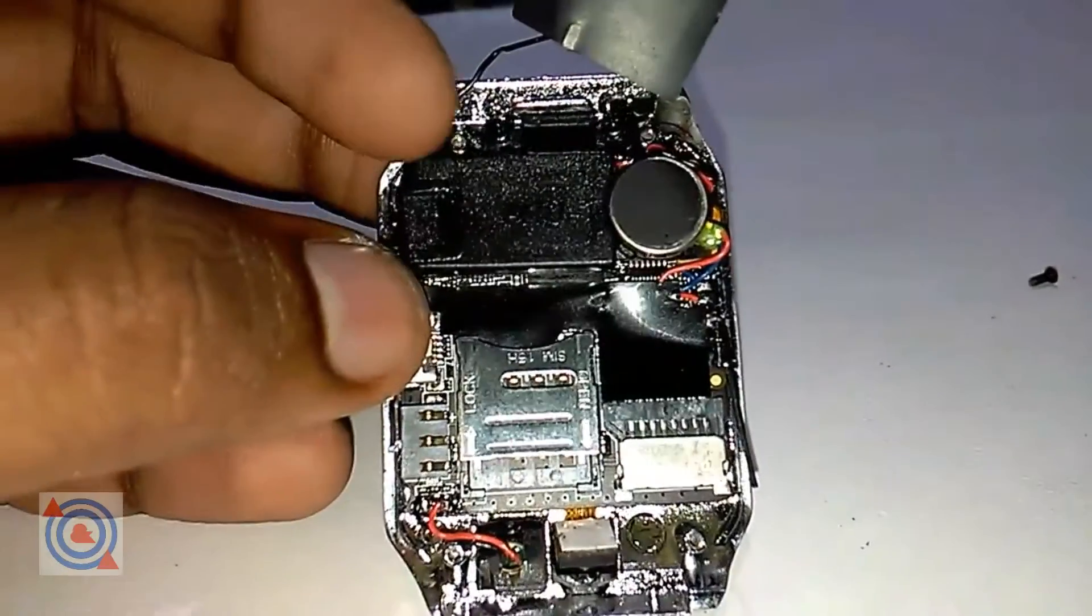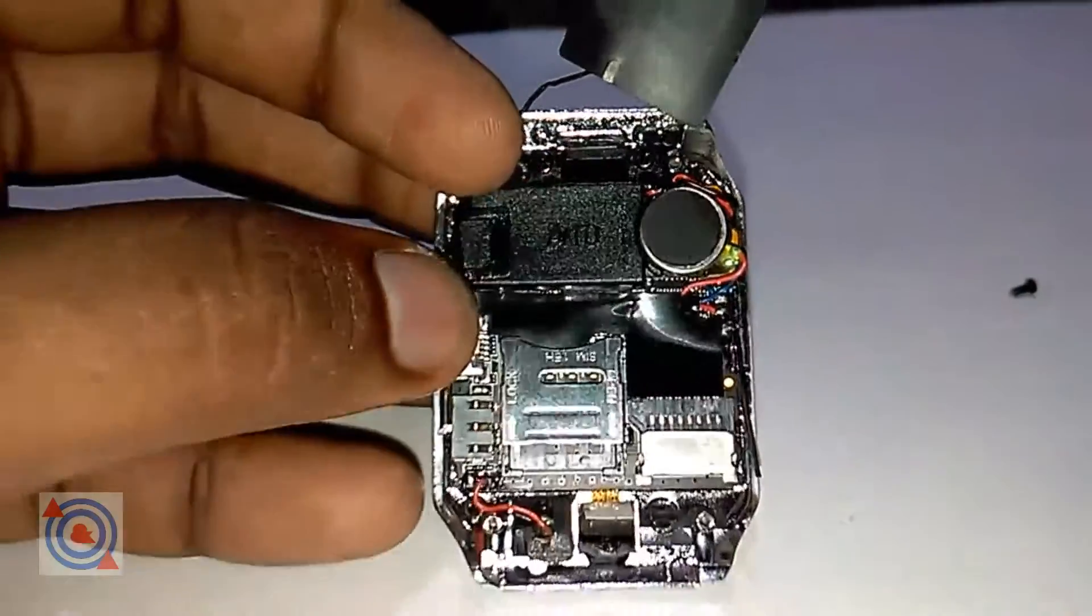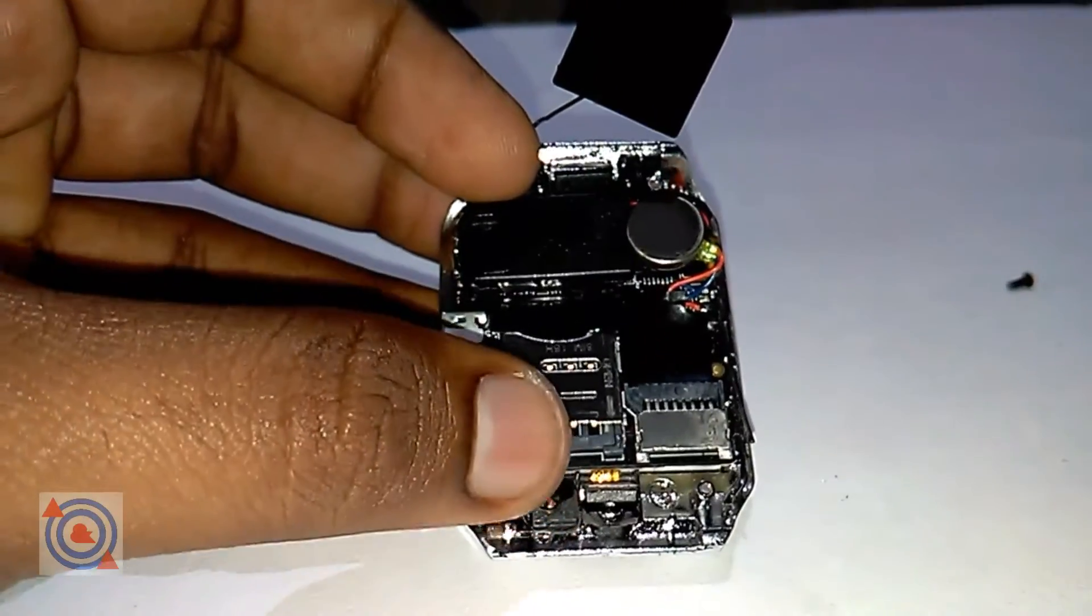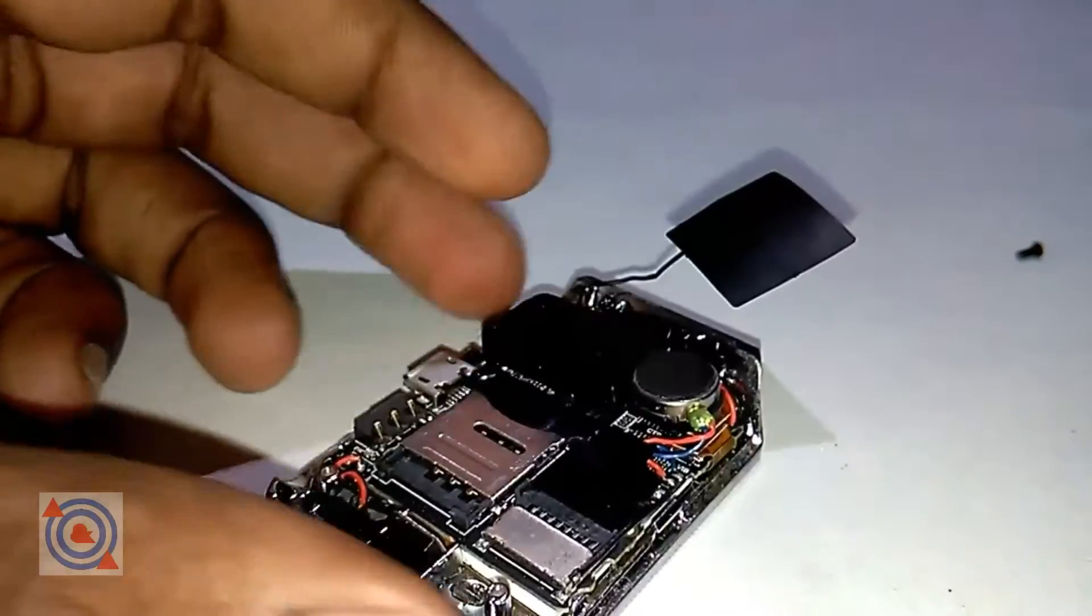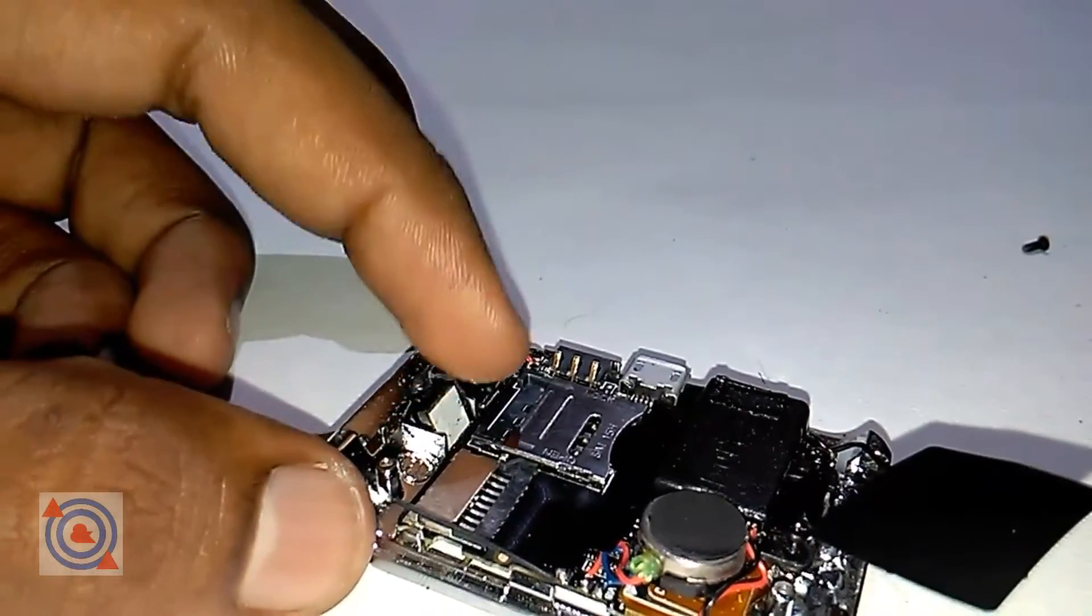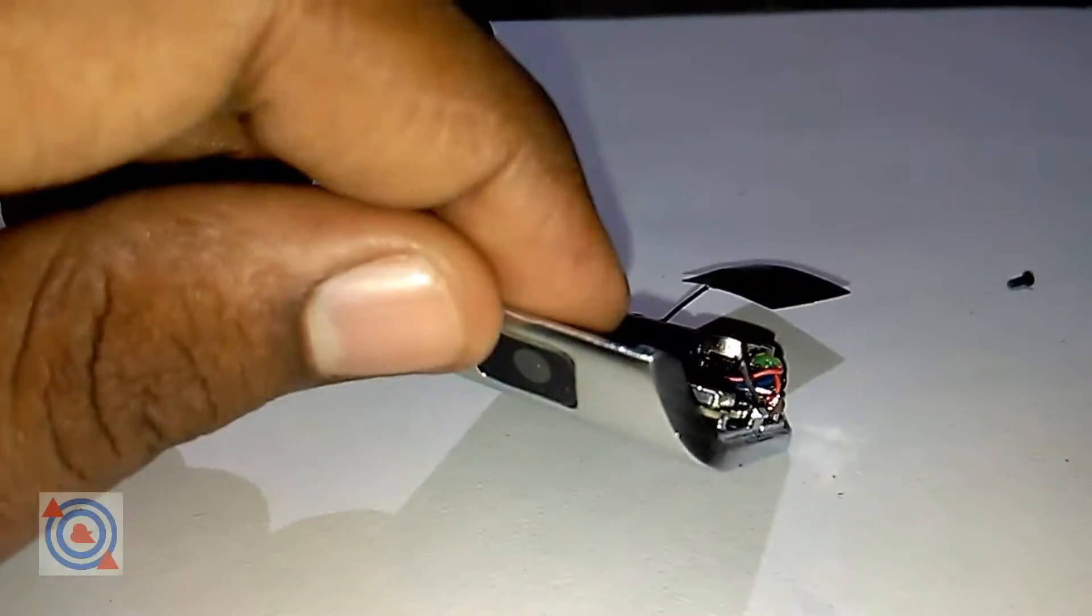Here is the vibrating motor. You can see some sort of sensor, I think, and the memory card slot and the microphone. You can see the wire going to the camera module.